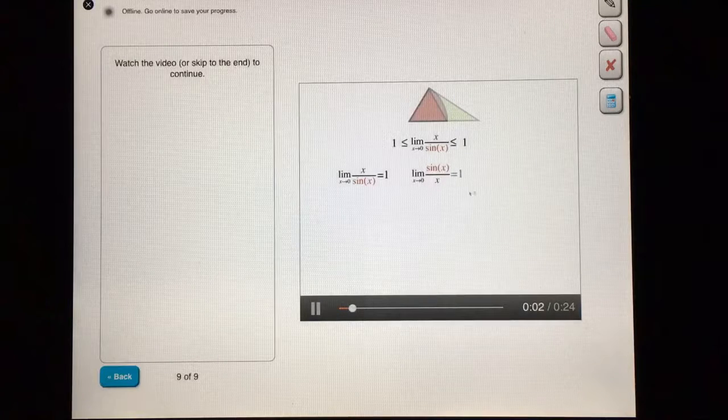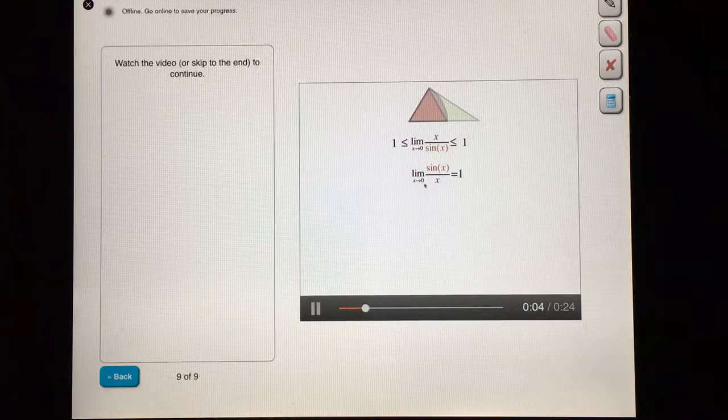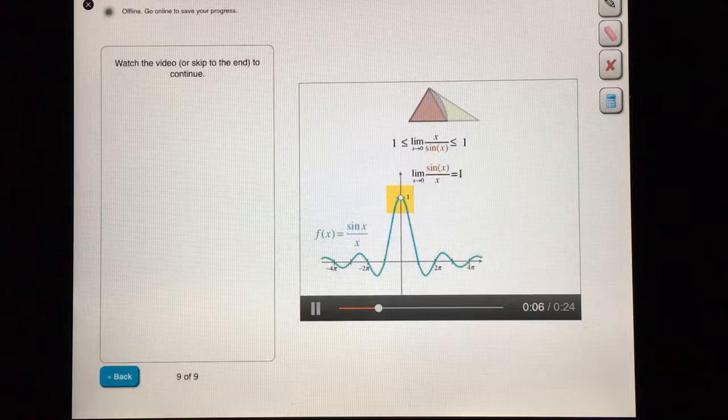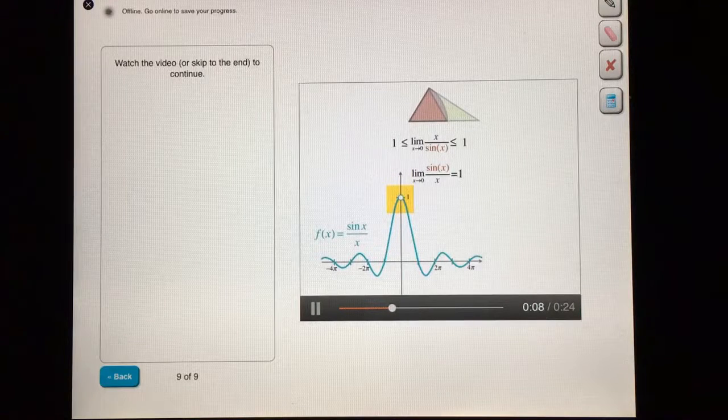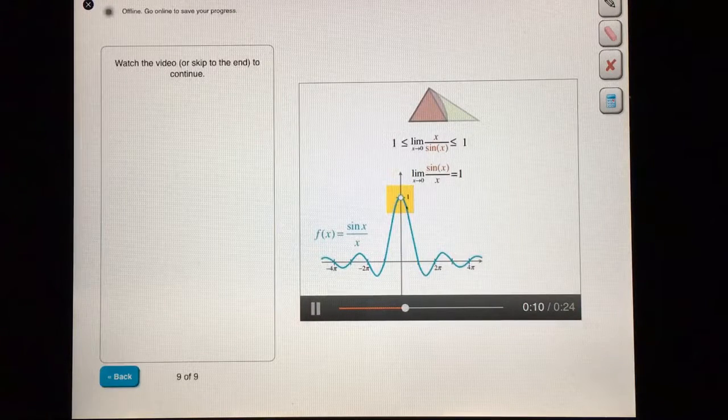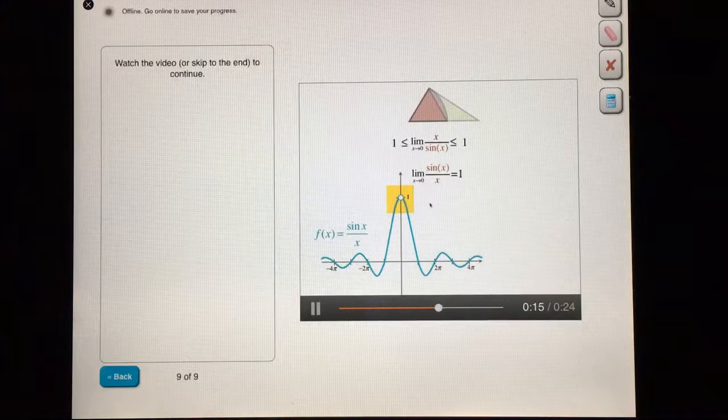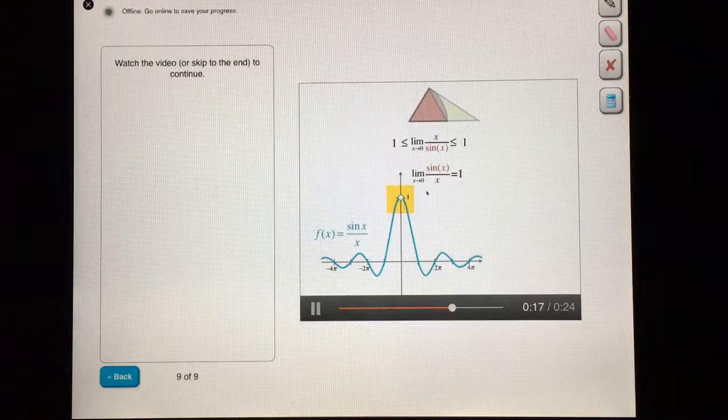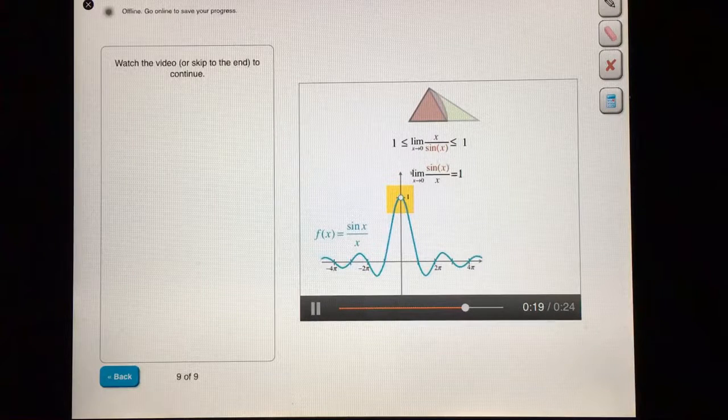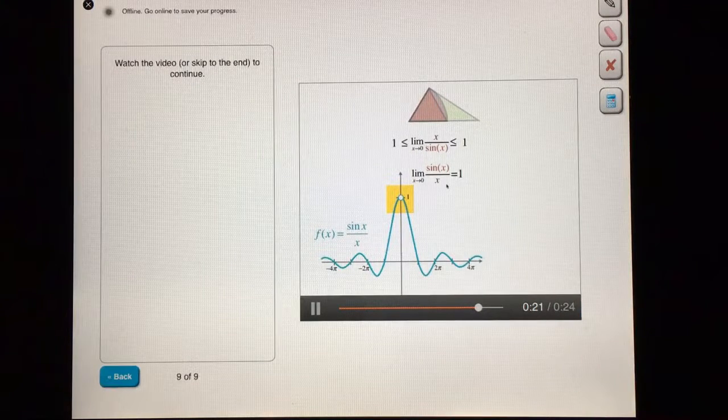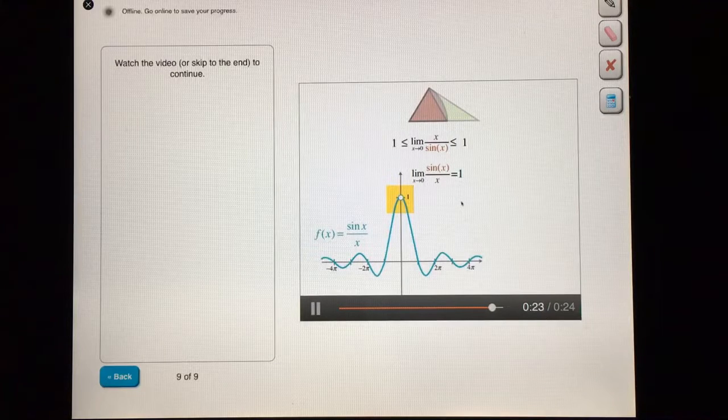Right, sin x over x also approaches one as x goes to zero. Here's the graph that we made at the beginning. It was hard work getting this limit, but it can show up over and over again when dealing with trig functions. Often, by using trig identities, you can reduce limits with trig functions to some version of the limit of sin x over x. So this is a great one to remember. Nice work.